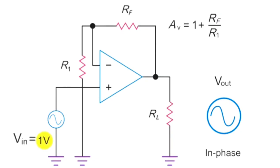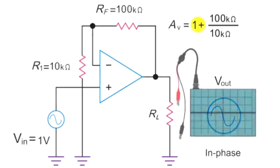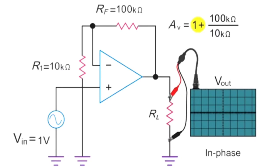So, for example, inputting 1 volt peak to peak with a feedback resistor value of 100 kiloohms divided by an R1 value of 10 kiloohms plus 1 will yield an in-phase output voltage signal with a gain of 11 volts at the RL resistor.